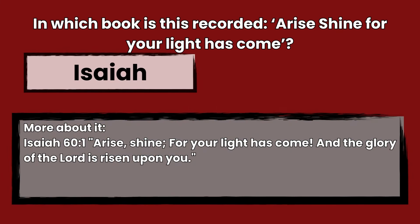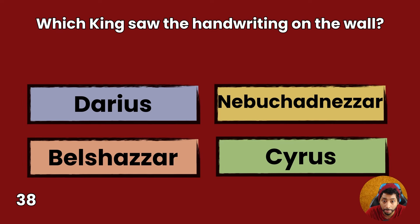Question 38: Which king saw the handwriting on the wall? Darius, Nebuchadnezzar, Belshazzar, or Cyrus? Answer: Belshazzar. Daniel 5:5 — In the same hour, the fingers of a man's hand appeared and wrote opposite the lampstand on the plaster of the wall of the king's palace, and the king Belshazzar saw the part of the hand that wrote.